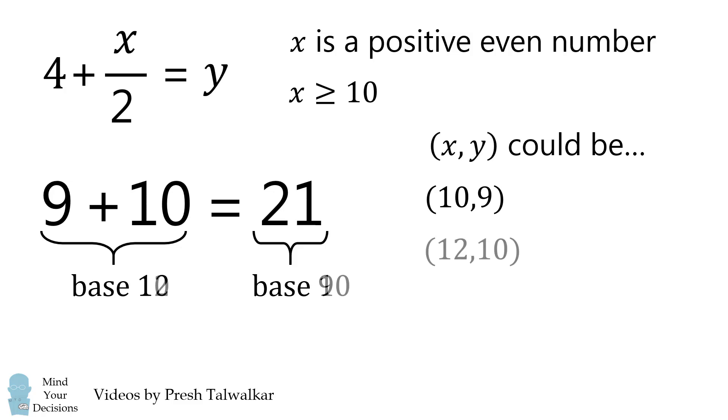We now increment by 2. 12 and 10 will be another valid solution. We can then increment x by 2 again, and we get another value for y. And we can continue this process indefinitely. As long as we have x and y is equal to 4 plus x over 2, this will be a valid solution.